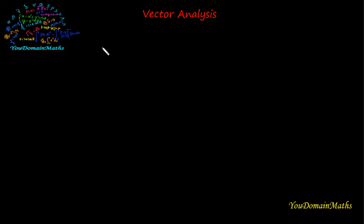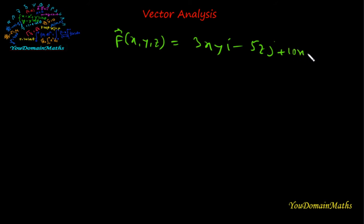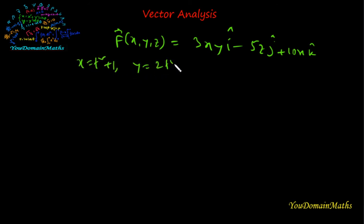Now we will see another example: finding the total work done in moving a particle in a force field defined by F = 3xy·i − 5z²·j + 10x·k, where i, j, k are unit vectors along x, y, z respectively. The coefficient of i is 3xy, the coefficient of j is −5z², and the coefficient of k is 10x. We find this work done along the path x = t² + 1, y = 2t², z = t³ from t = 1 to t = 2.